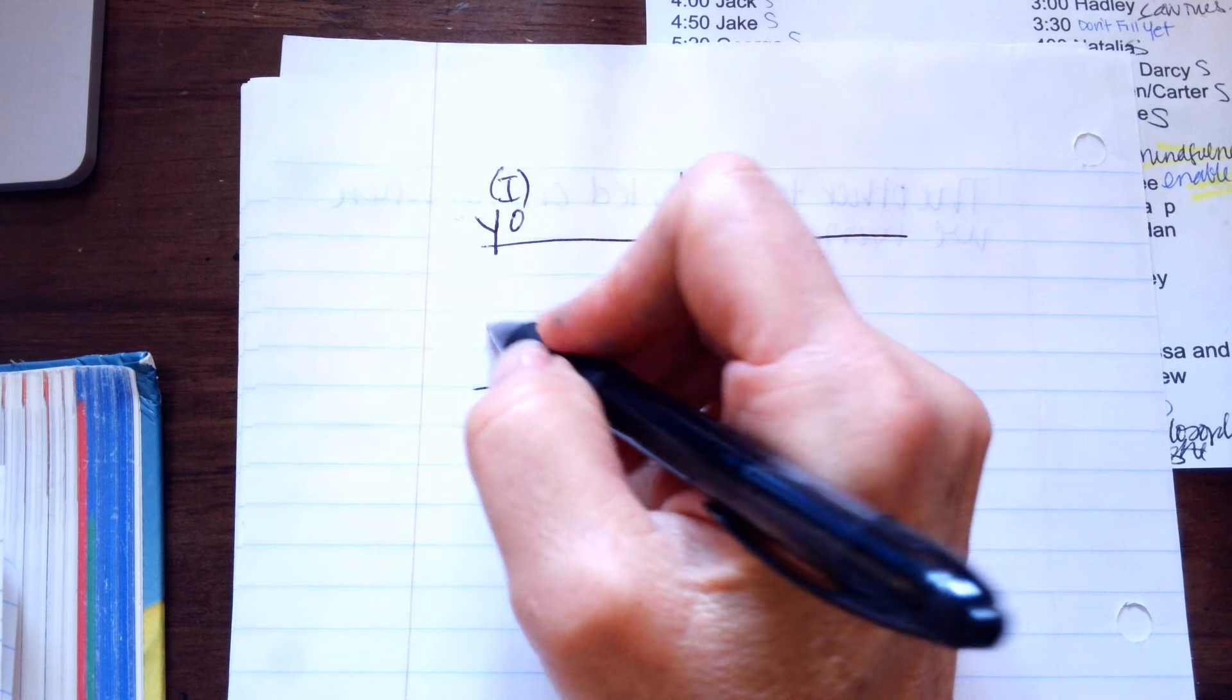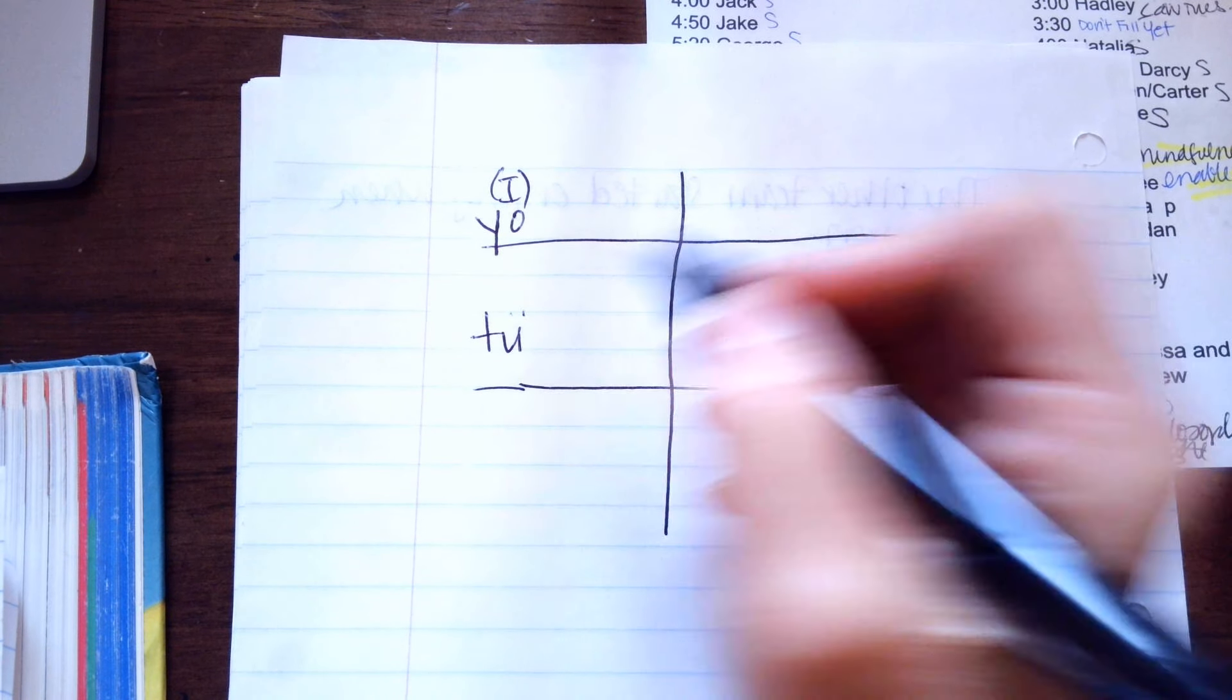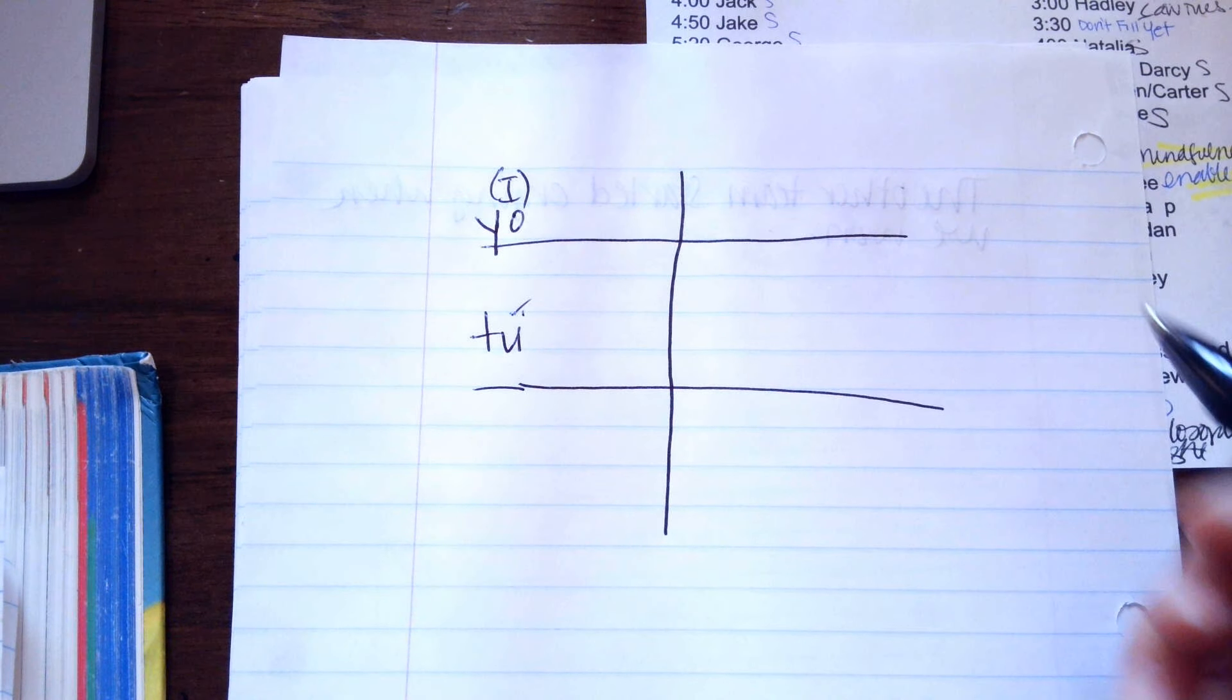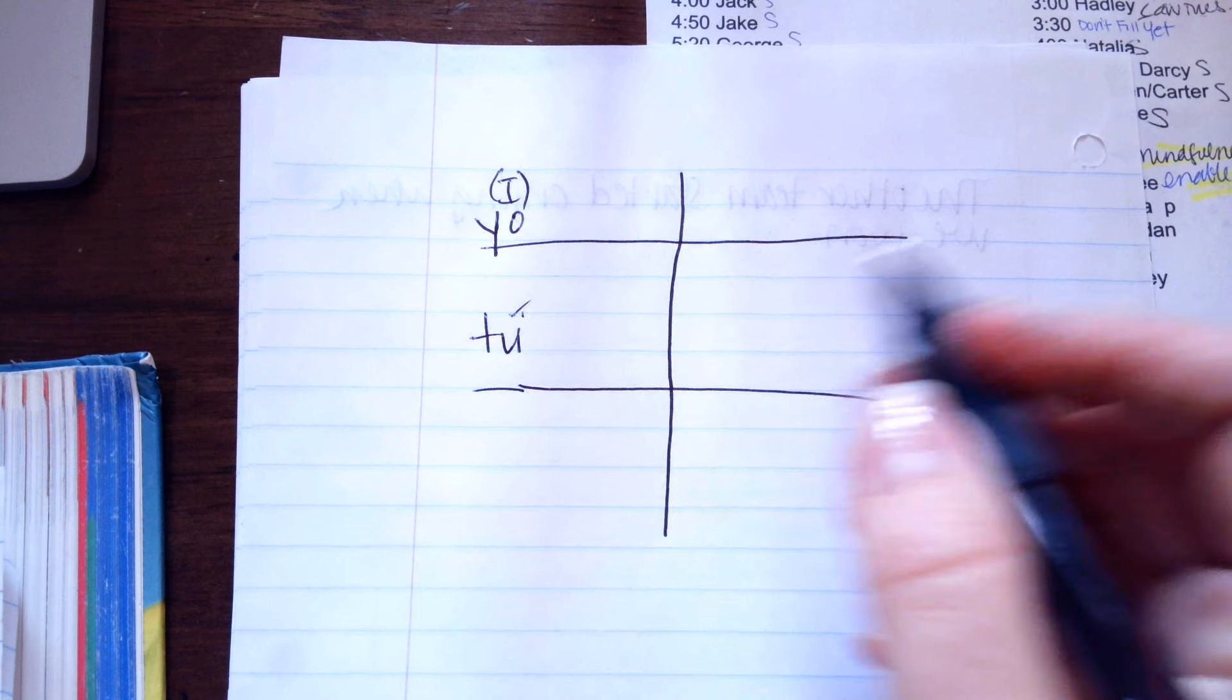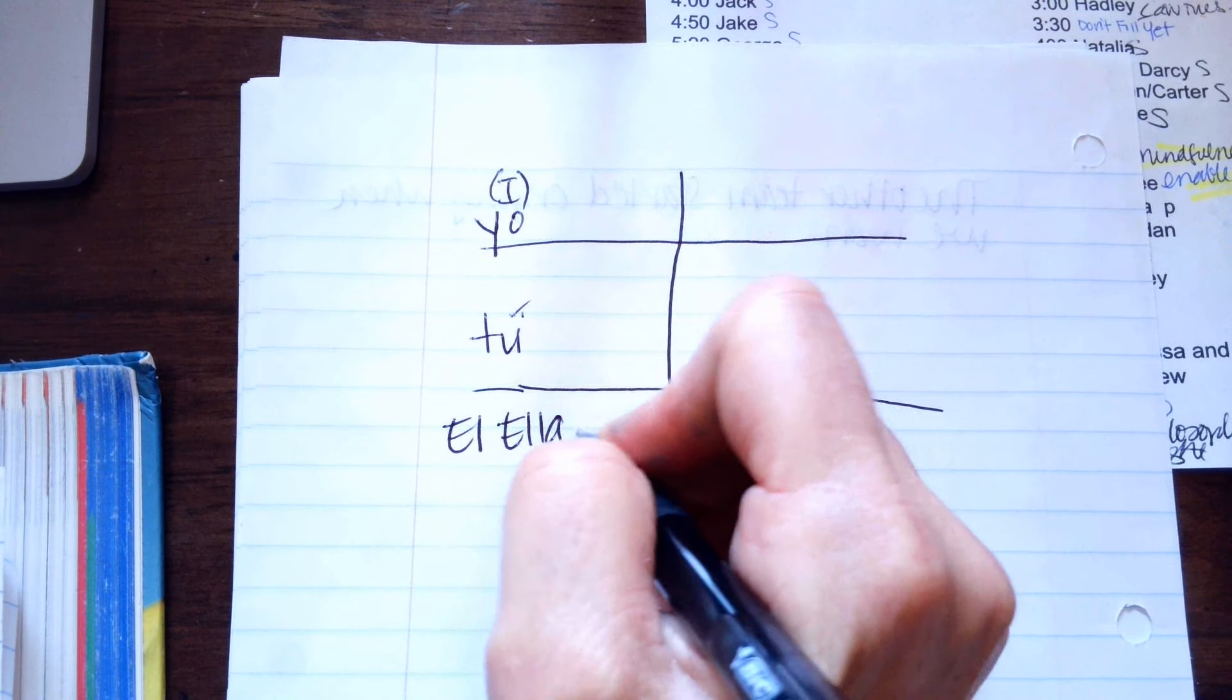This is tú, and it has a little thing like this, and you say it like this, tú. This is él, ella, and usted.